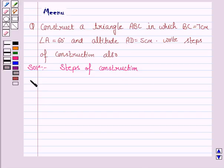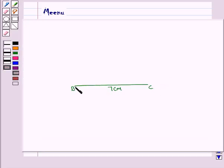The first step is draw a line segment BC equal to 7 cm. So, this is the line segment BC which has length 7 cm.